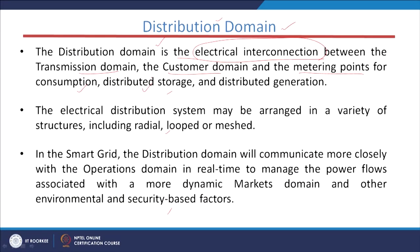These two domains are interconnected with the help of the distribution domain, and it includes metering points for consumption, distributed sources, storage, and distributed generation. Apart from the interconnection between the transmission and customer domains, the metering points are very important — for consumption, distributed storage, and distributed generation. Distributed generation includes renewable sources such as solar systems, wind systems, fuel cell systems, and micro hydro systems.